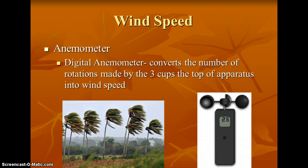To measure wind speed, we use an instrument called an anemometer. You've probably seen these on top of sailboats or weather stations — they spin around. The wind captures the cup, causing it to move, and it measures the rotations made by the cup. A digital anemometer is going to be your more accurate, easiest to read option.